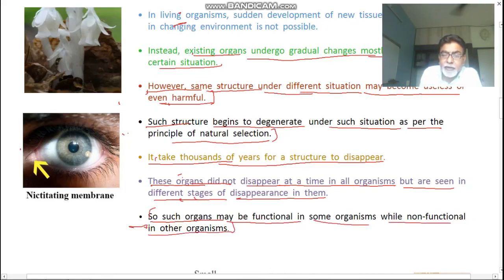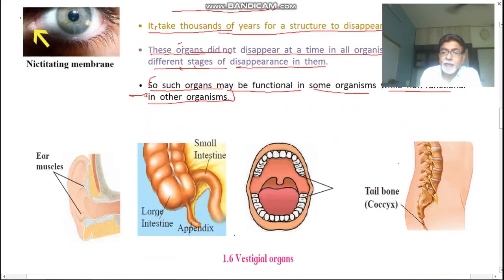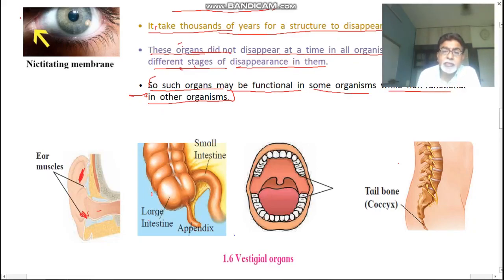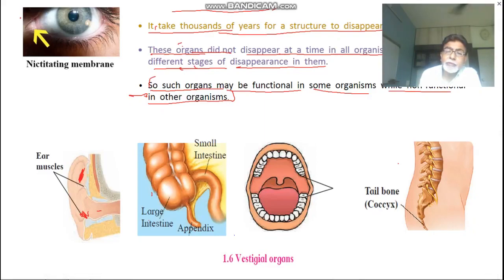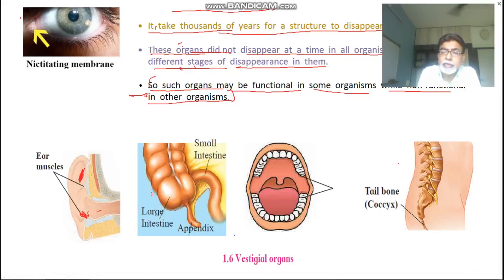What are vestigial organs — functional and non-functional? First example: your ear muscles. Our ancestors and forefathers used these muscles to swing the ear. But during development, the movement of ears has stopped and slowly the ear muscles became degenerated and are now rudimentary. These are vestigial organs for us.